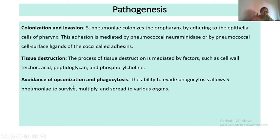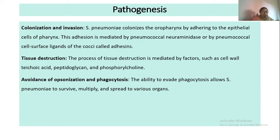Third, avoidance of opsonization and phagocytosis. Because they have a capsule, the capsule contributes to its pathogenicity by helping the organism evade phagocytosis — they cannot be phagocytosed by macrophages, as the capsule inhibits that process.